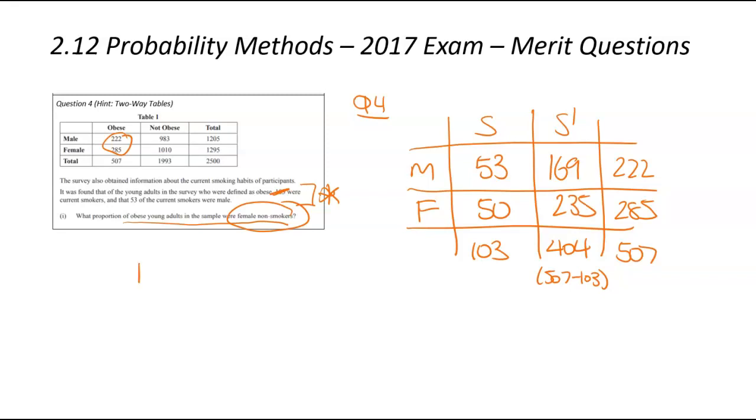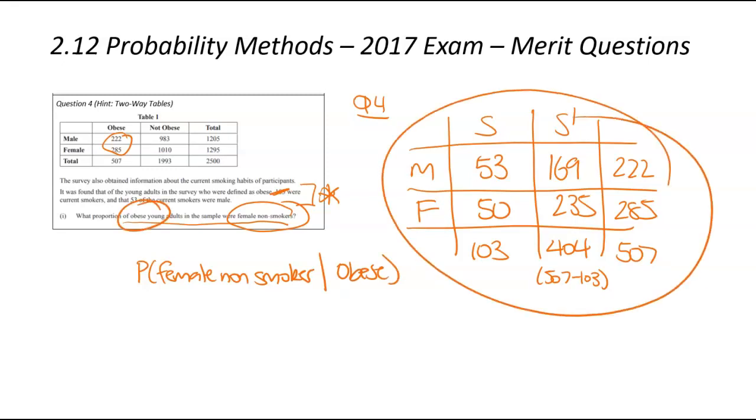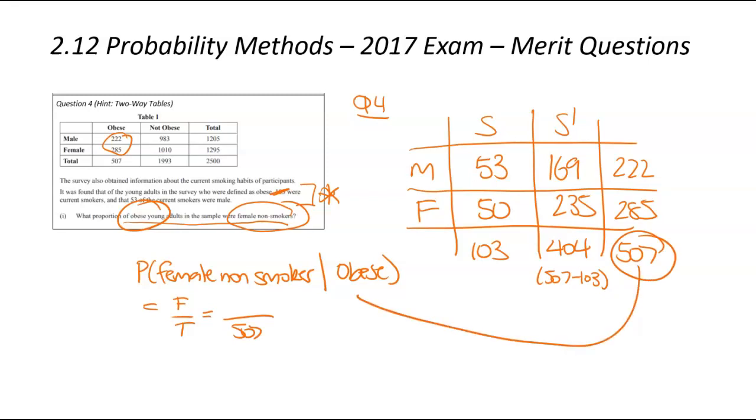So now that we've got our filled out table, we can actually go ahead and answer the question. So what we're doing here is we're trying to find, well, what's the probability of a female non-smoker? Don't forget, given they were obese, and that's because we've made a separate table just on the obese members of that, or the obese participants of that survey we looked at. We're now going to get into F over T. Total, nice and easy. There were 507 obese people.